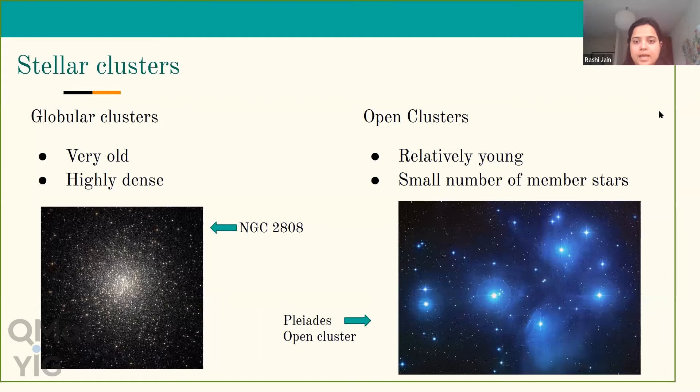We see a picture of two clusters in this slide. One is NGC 288, one of the very old globular clusters — we can see it is very spherical in shape. The other is the Pleiades open cluster, one of the most popular open clusters, which we can actually see on a clear night with our naked eyes.